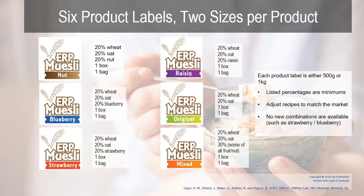Within this, you are able to adjust recipes to match market preferences, but there are no new combinations available. So you can't have, for example, a strawberry-blueberry muesli or a nut-blueberry muesli — it has to fit within the general guidelines.